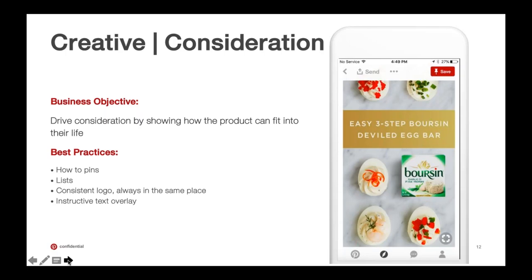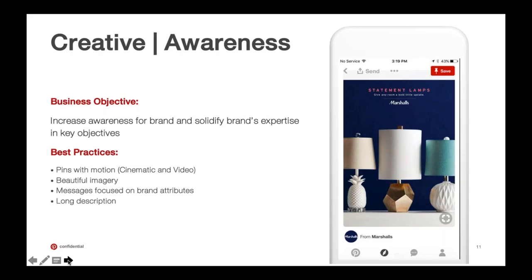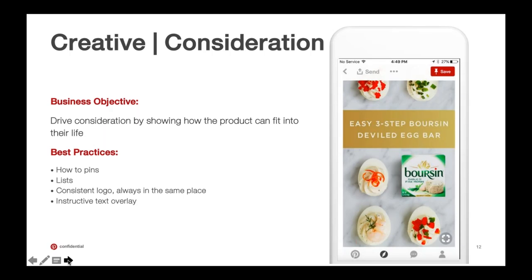We've bucketed creative into three categories — awareness and consideration. Holistically for creative: use contrasting colors, your value prop needs to be on the pin. What are we asking our pinner to do — buy something, read an article? Something like 'easy three-step deviled egg recipe' so we know what the pinner is getting into. Think of our white backdrop on Pinterest and ensure that your brand and colors contrast to that in-feed.